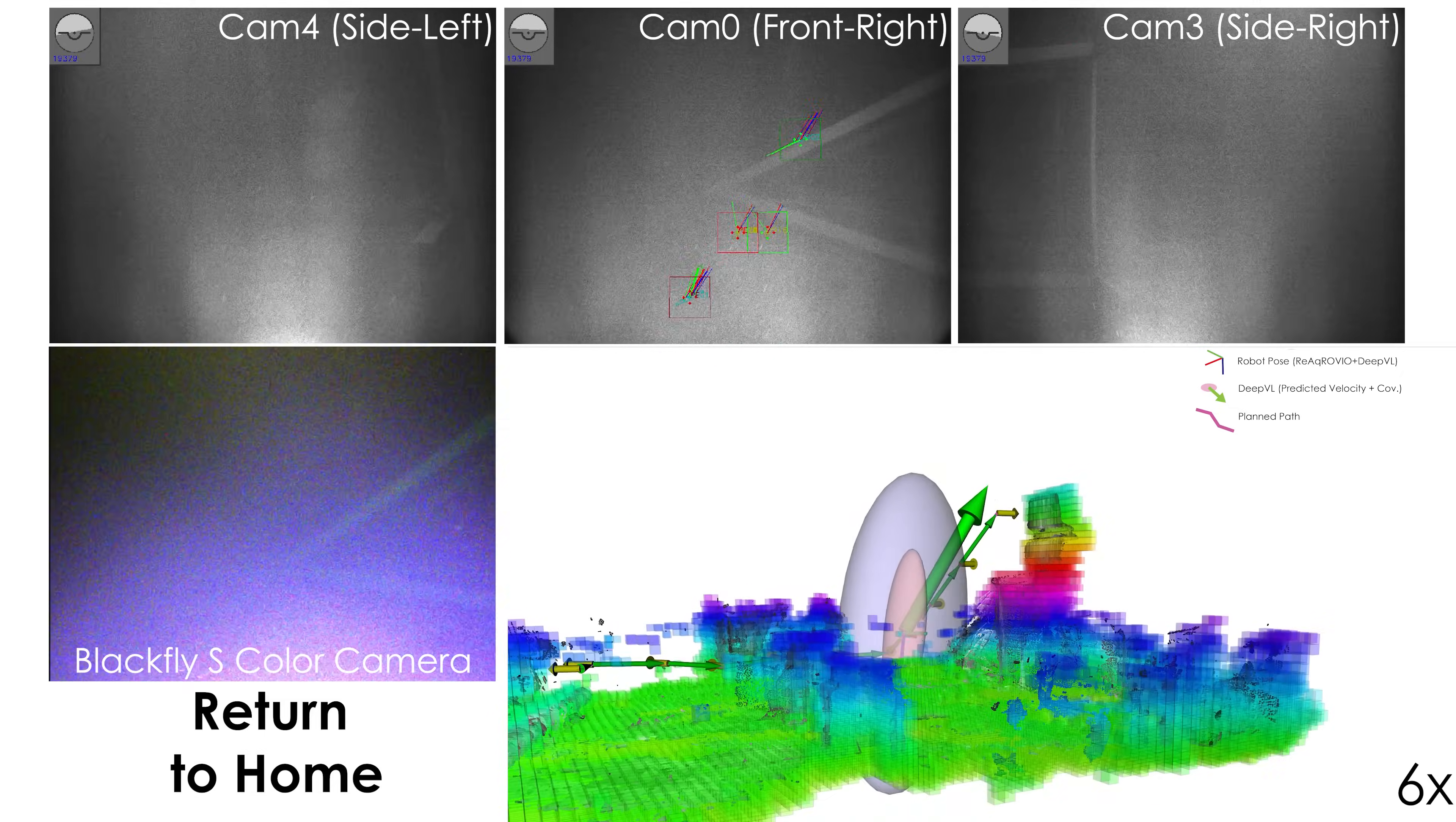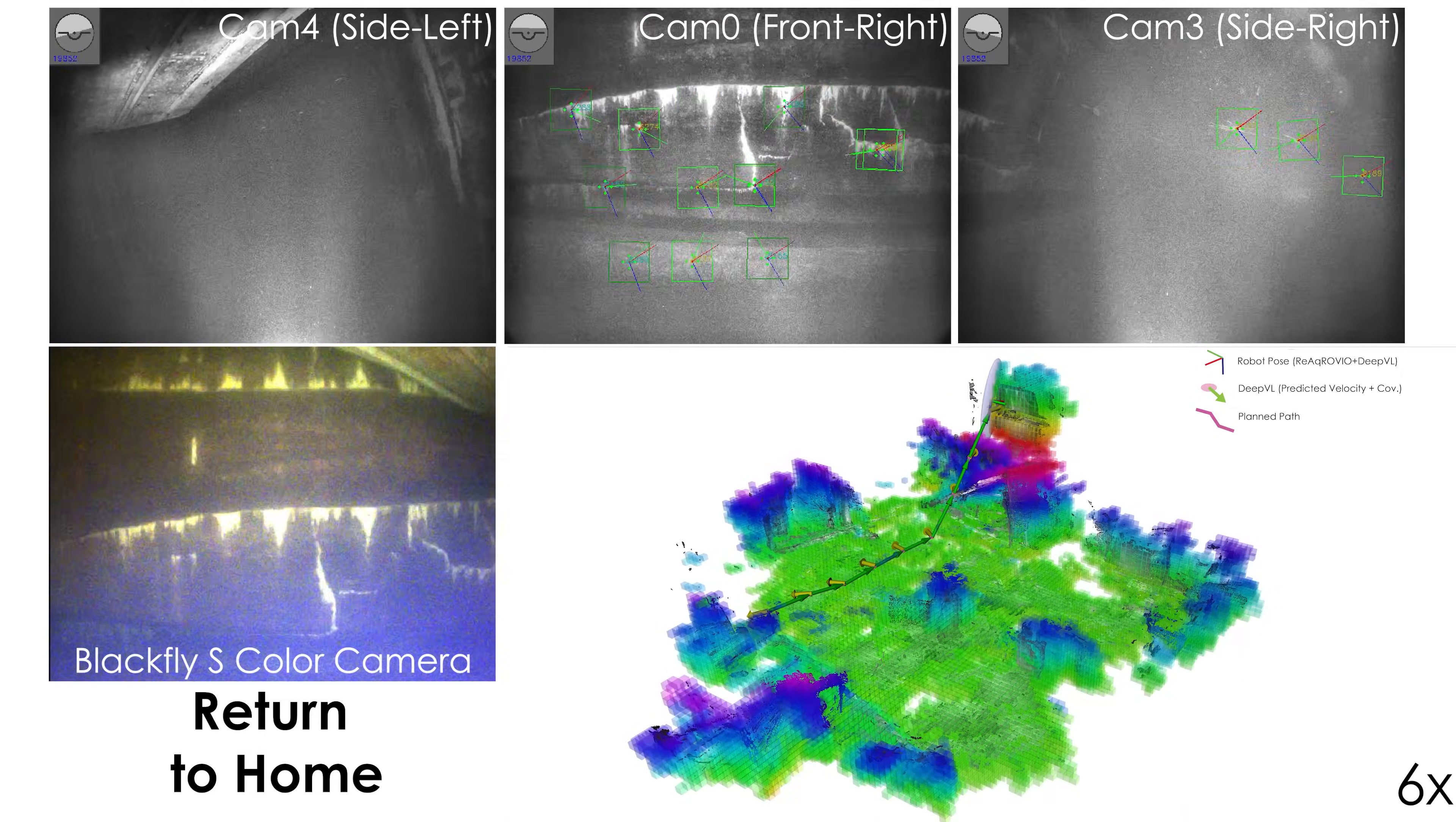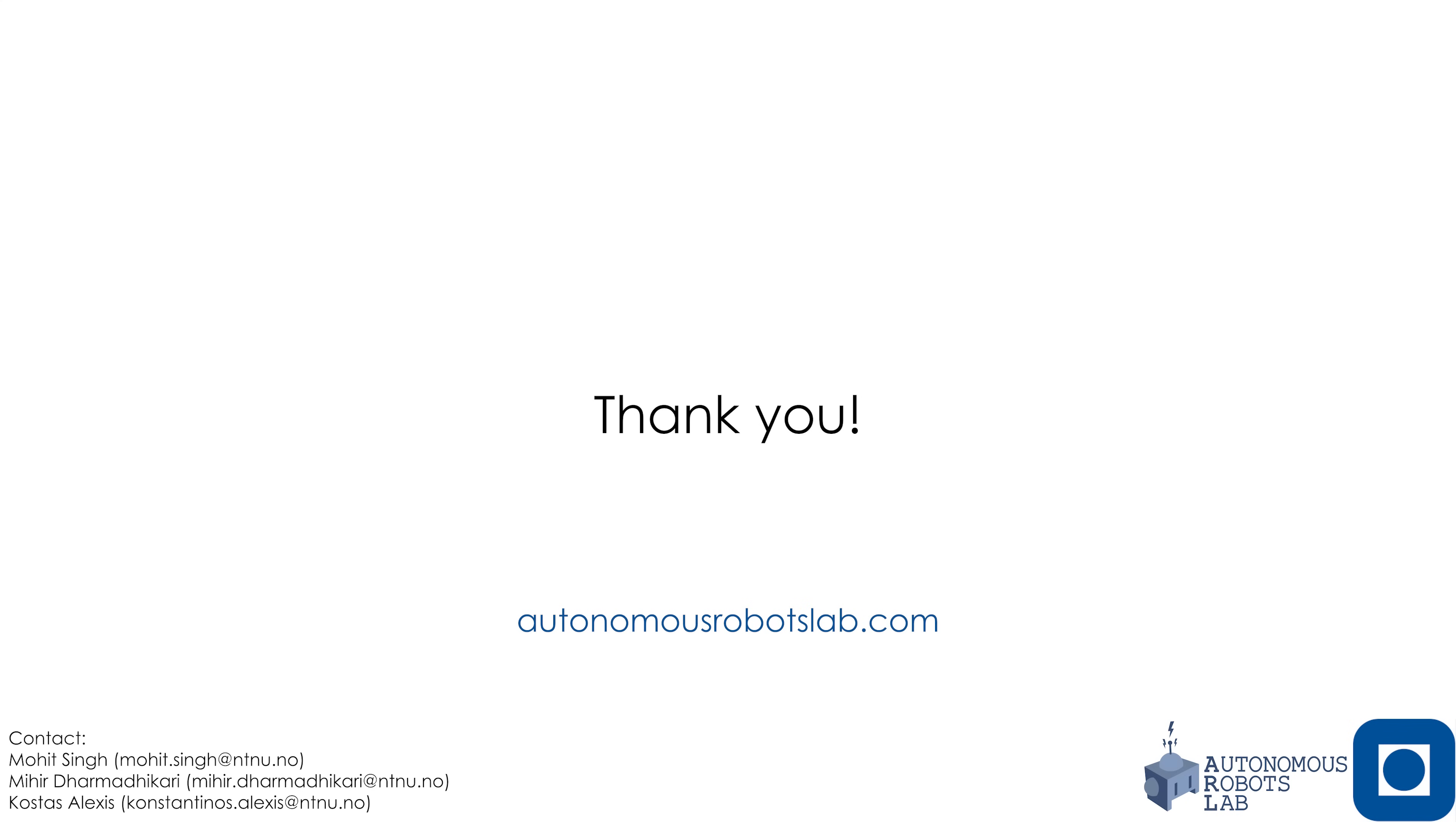This experiment shows the final map and the filtered point cloud from the autonomous exploration and inspection, alongside the camera view at the start and the end of the mission after homing, highlighting the resilience of the visual inertial state estimation and exploration path planning in visually degraded underwater environments.